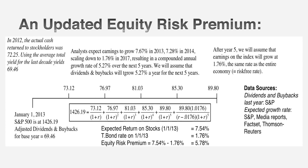I bring one final piece into the puzzle. Analysts in the U.S. often estimate growth in earnings for the S&P 500. I collect those growth numbers, and based on them, I project out an expected growth in cash flows for the next five years — 5.27%. I grow last year's cash flow at that 5.27%, and at some point I assume that growth rate will revert back to the growth rate of the economy, using the risk-free rate as my proxy.